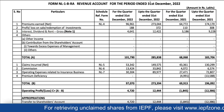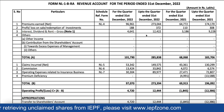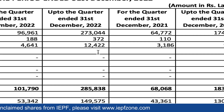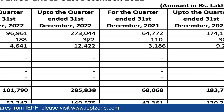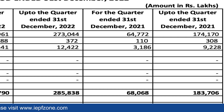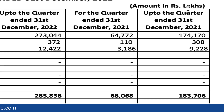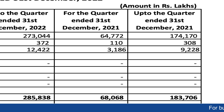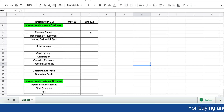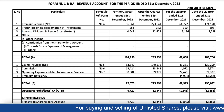We have the public disclosure available which Care Health Insurance has provided, so let us analyze the results. Looking at the insurance business, the premium earned last year up to quarter three was 1,741 crores. This year they have earned 2,730 crores in the nine months of FY23.